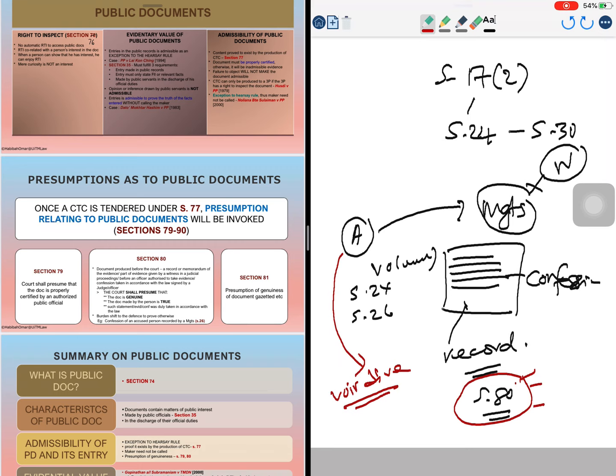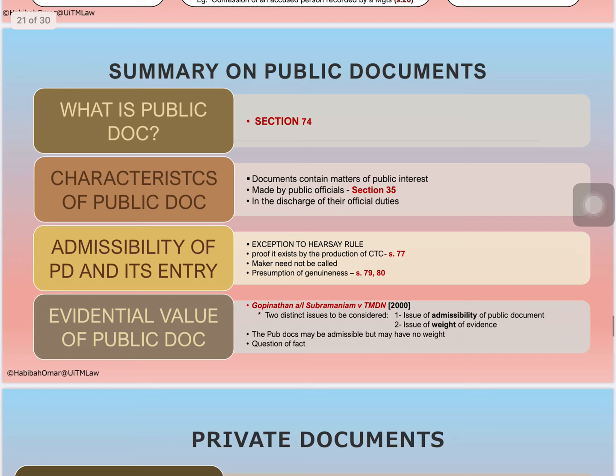There are also other presumptions under section 81 — presumption as to gazette and newspapers — which are also presumed to be genuine. If a law has been gazetted, it is deemed to be genuine.